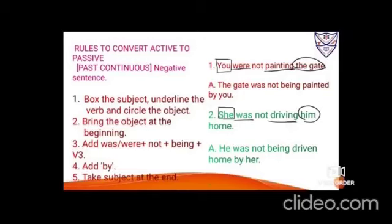Example 1: 'You were not painting the gate.' 'You' is the subject, 'were painting' is the verb, 'the gate' is the object. Bring 'the gate' ahead — it was 'you' so 'were' was used, now it's 'gate' so 'was' is used. Bring down 'not'. Give -ing → 'being'. Third form: paint → painted. Add 'by you'. Result: 'The gate was not being painted by you.'